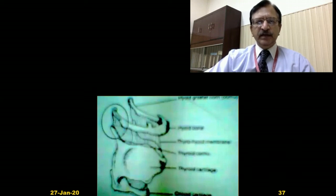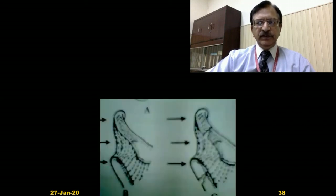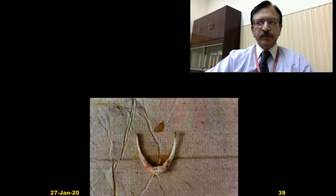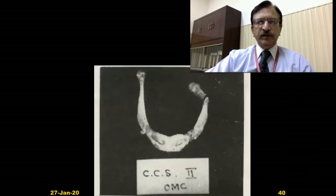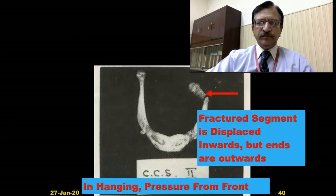A diagrammatic representation shows the hyoid bone at top, the thyroid cartilage in the center, and the cricoid cartilage below, connected by the thyrohyoid membrane and the cricothyroid ligament. Pressures that move the fracture segment inward with ends outward are illustrated. In another completely ossified bone photograph, the fracture segment is displaced inward but the ends protrude outwards — this occurs in hanging when the pressure is from the front.